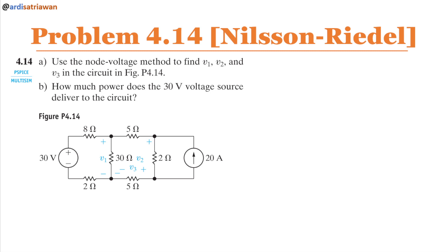Hello, my name is RD and we are going to solve problem 4.14 from the Nilsson and Riedel book. The question is: use the node voltage method to find V1, V2, and V3 in the circuit. V1 is here, V2 is across this 2-ohm resistor, V3 is across this 5-ohm resistor. Part B asks how much power does the 30-volt voltage source deliver to the circuit.